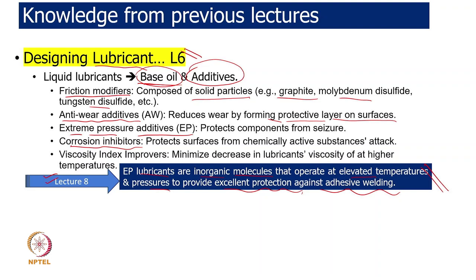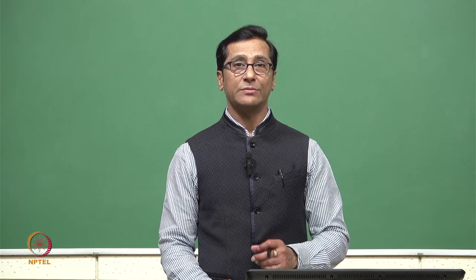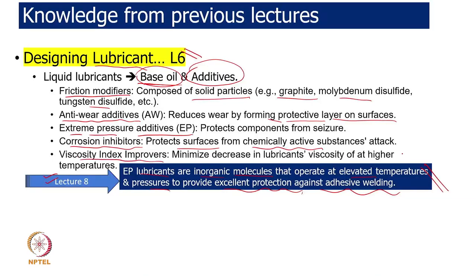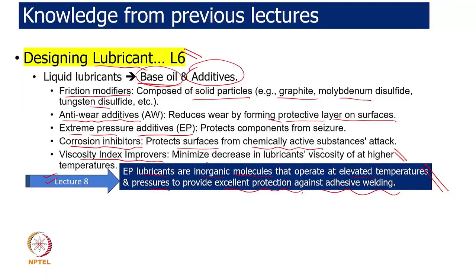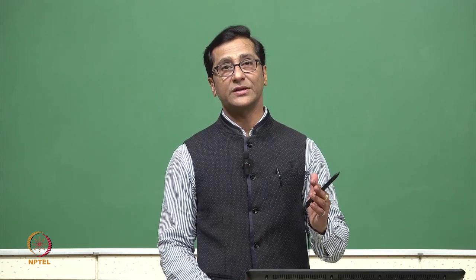Corrosion inhibitors are needed particularly in humid environments that cause rusting, or when chemical substances like SO₂ or acids are present. Viscosity improvers are additives that enhance the viscosity index, meaning the temperature-related decrease in viscosity is minimized. The goal is that viscosity remains stable with temperature — high-temperature viscosity should not decrease significantly.